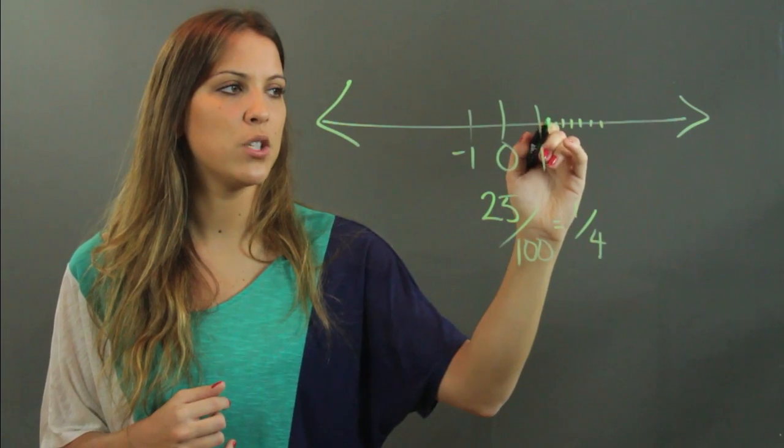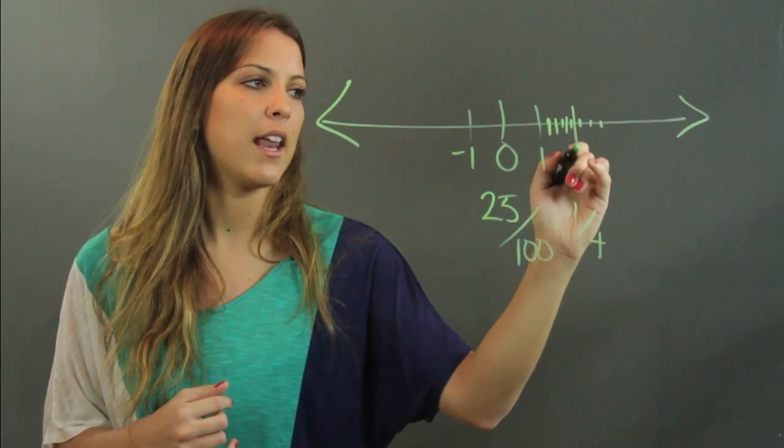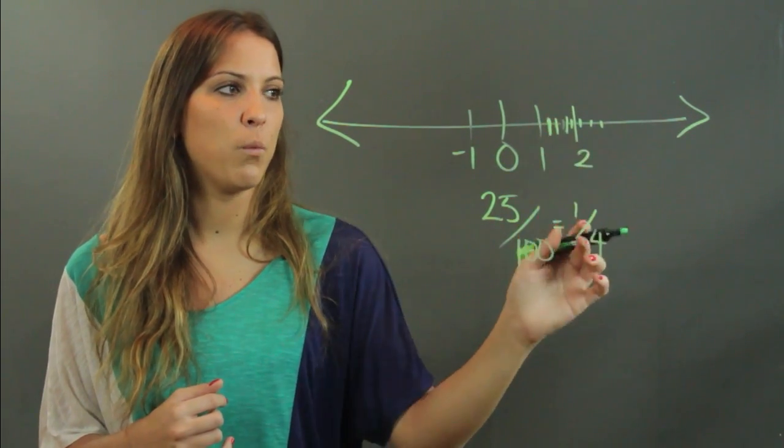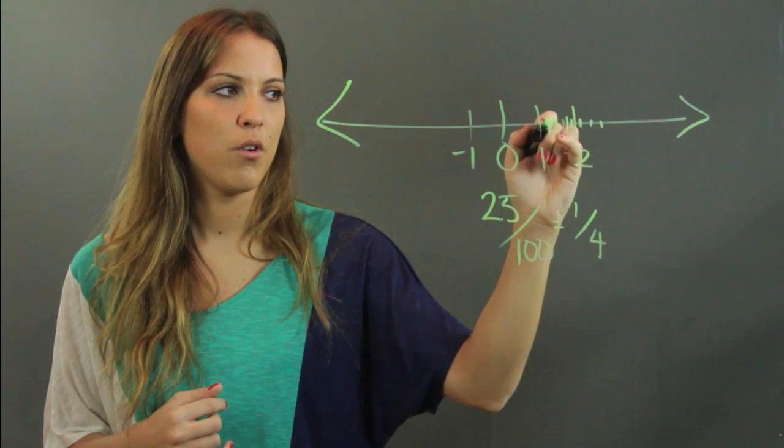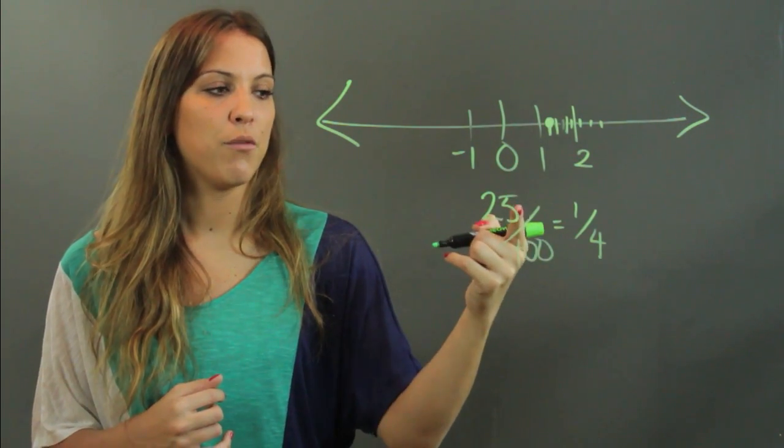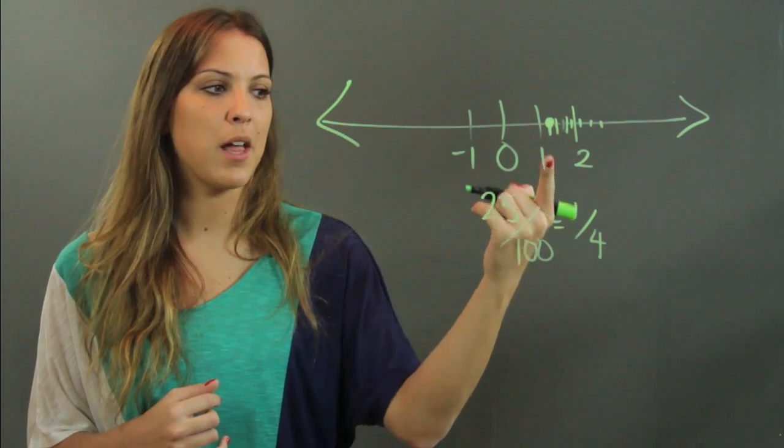So now if between one and two, I draw one, two, three, and I make this my two, then one-fourth would be found right here. So reduce it if you can and then that'll make it easier to plot.